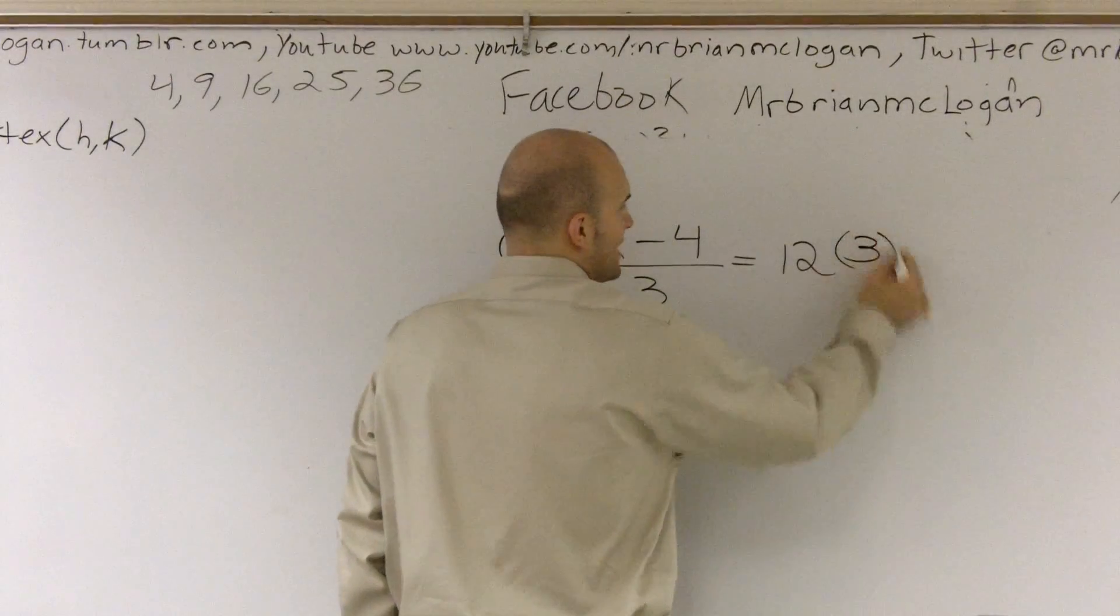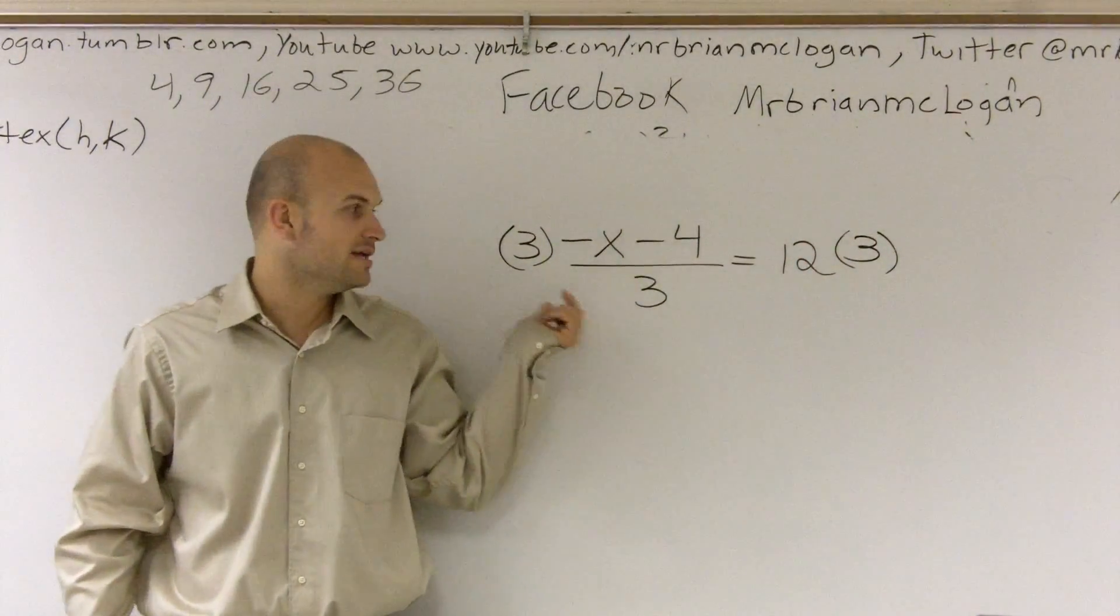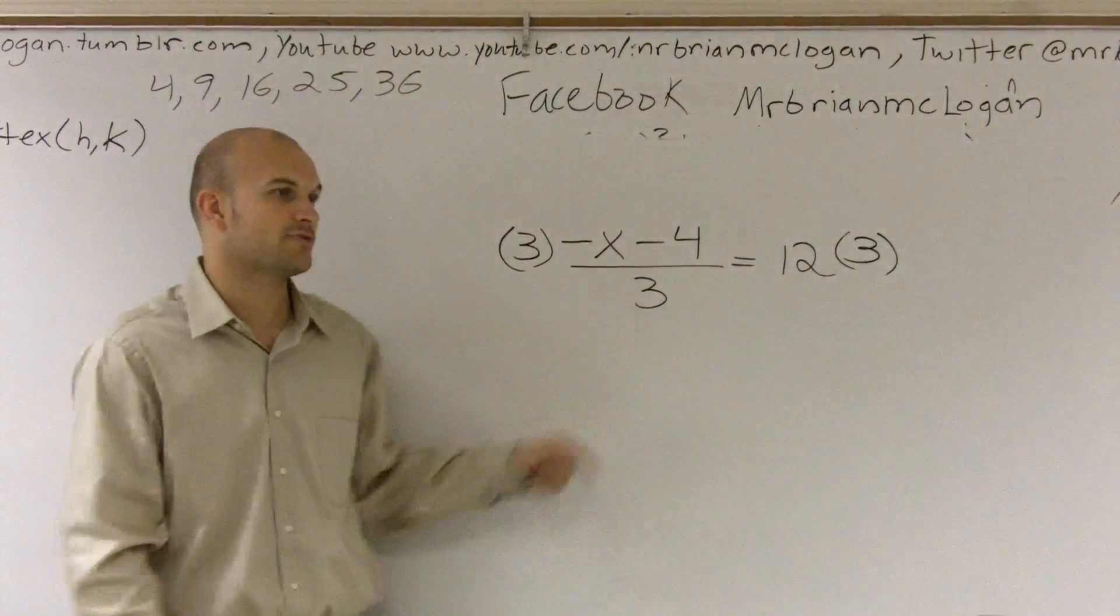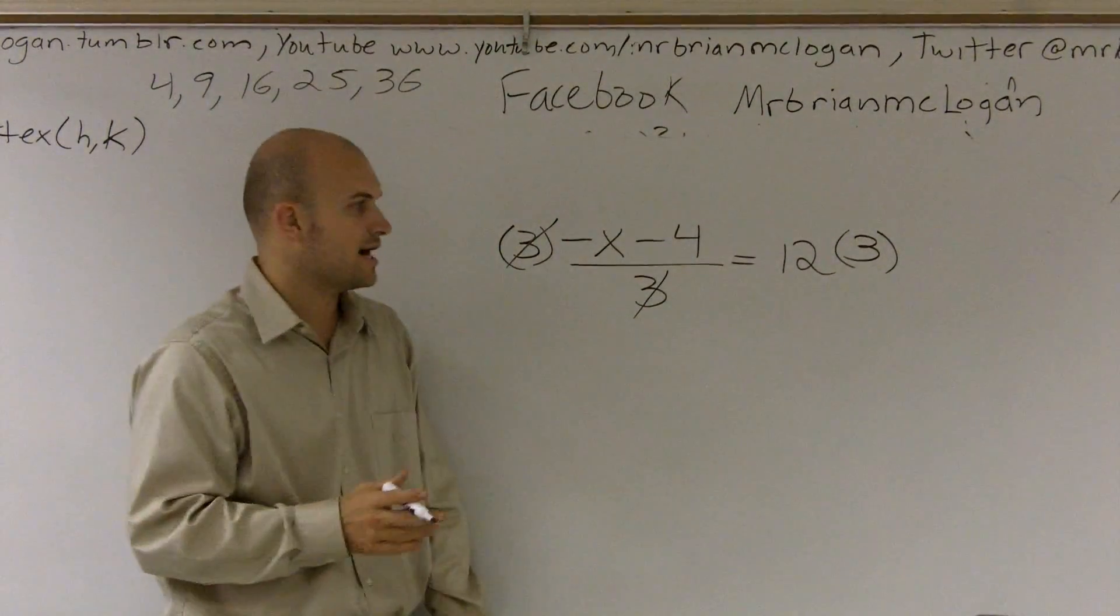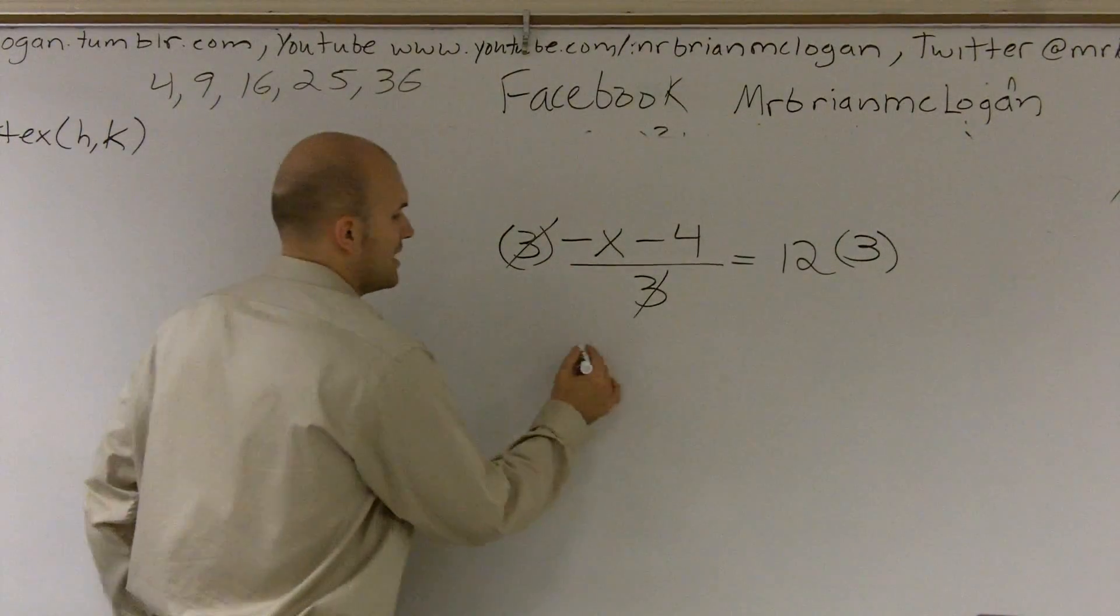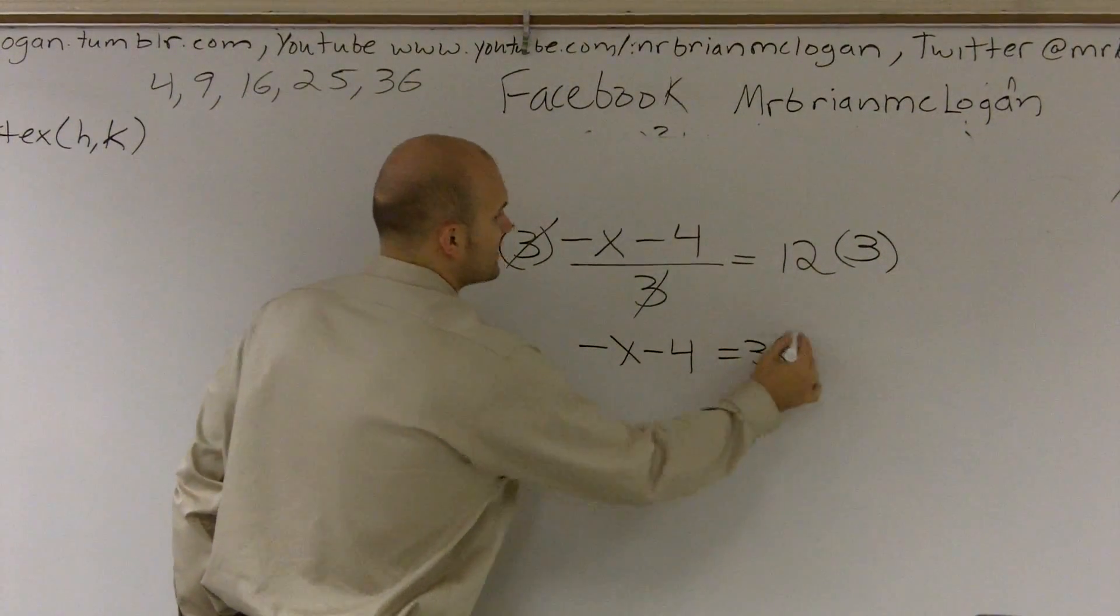Now that is okay to do as long as you do it on the left and the right side. So if I multiply by 3, I now get 3 divided by 3, which goes to 1, which we like to say sometimes cancels out. So therefore I can write negative x minus 4 equals 36.